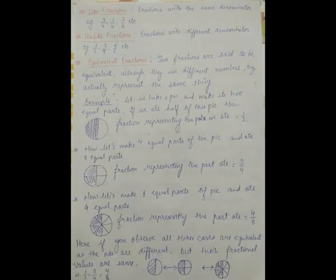Like fractions: fractions with the same denominator are called like fractions. For example, three by four, one by four, seven by four, etc. In all these cases the denominators are equal. Unlike fractions: fractions with different denominators are called unlike fractions. For example, one by two, three by four, five by six — all have different denominators, so they are unlike to each other.